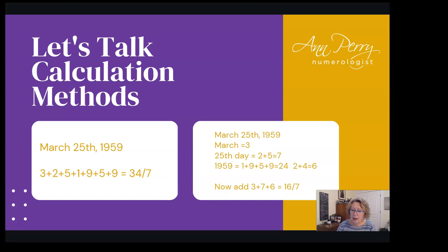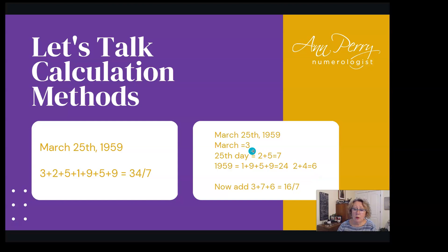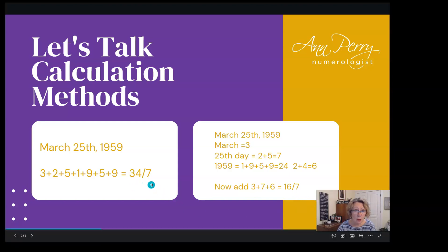That's when I learned the method related to the teachings of Matthew Oliver Goodwin. In Matthew's way, we break down each piece of the date of birth independently. March is a three — single digit, leave it as three. The 25th day: two plus five equals seven. 1959: add all the numbers up, comes to twenty-four, and two plus four equals six. Now add all those reduced numbers together: three plus seven plus six equals sixteen, and one plus six equals seven.